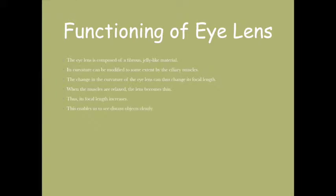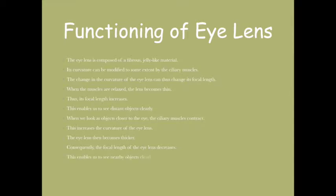When we have to look at objects very near to the eye, the ciliary muscles contract. This increases the curvature of the eye lens and it becomes very thick. As the eye lens becomes thick, the focal length decreases, and we can consequently look at nearer objects more clearly.